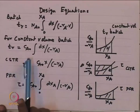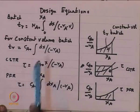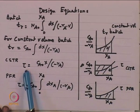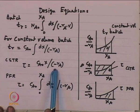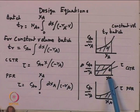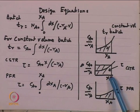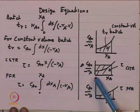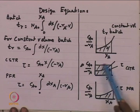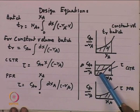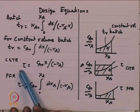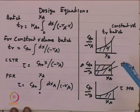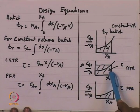For a CSTR, the residence time is given as C_A0 times X_A divided by (-r_A). We can make a plot of C_A0/(-r_A) versus X_A — this data comes from our experiments. If you want to take the reaction from 0 to X_A, the area under this rectangle gives the residence time for a CSTR. The residence time for a CSTR is C_A0 times X divided by (-r_A), which corresponds to the rectangle visible on the plot.